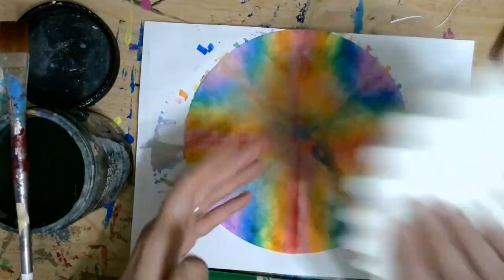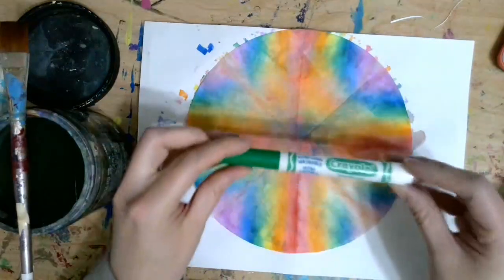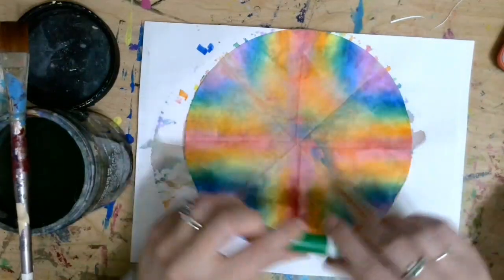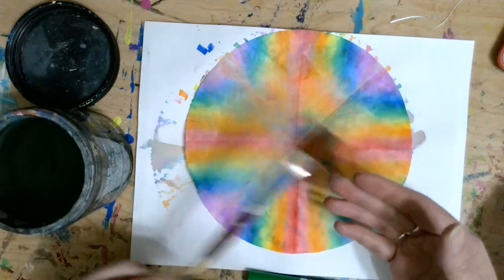So what we're going to need is some coffee filters. You will need washable markers. I'm going to use Crayola. Some water and then something to put the water on with. So I'll be using a paintbrush.